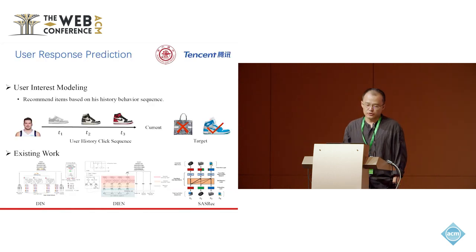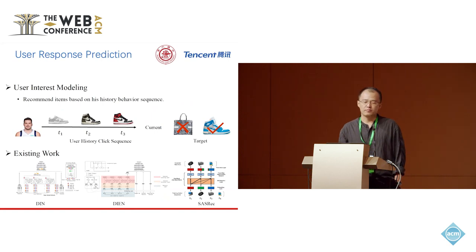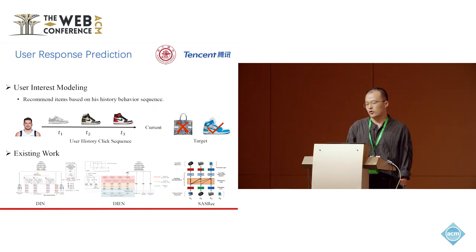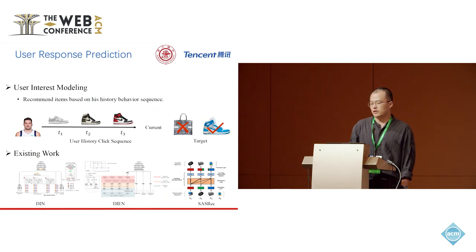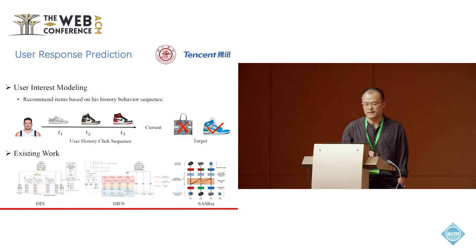User interest modeling is a critical task in recommendation, which aims to recommend new items to a user based on his history behaviors. For example, if a user has viewed lots of basketball shoes before, then for a new request, it's better to recommend him a new pair of basketball shoes rather than a handbag. There are many existing works on this topic, including target attention methods like DIN and sequential recommenders like SASREC.